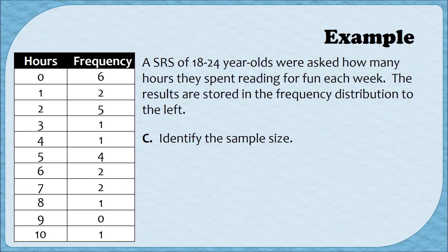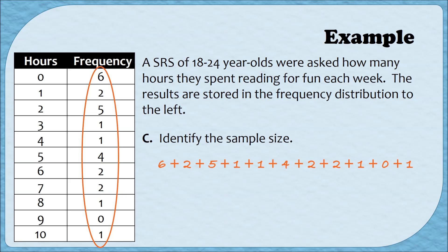Part C asks us to identify the sample size. We were told a simple random sample of 18- to 24-year-olds was surveyed, but not how many people were actually in the sample. Similar to our verification check from the previous example, we add all of the frequencies together. That total tells us how many people were surveyed. Adding all the numbers in the frequency column gives us 25 people in this sample.